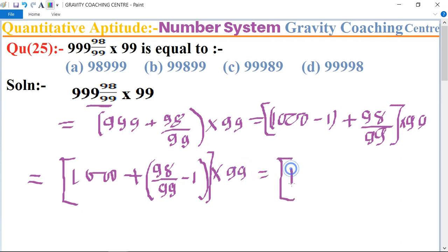Equal to 1000, and after calculating, the result is minus 1 upon 99 multiply 99. Now multiply 99 with both the terms.